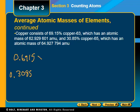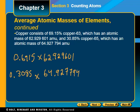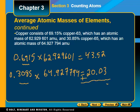Step two: multiply each decimal by its precise relative atomic mass — 0.6915 × 62.929601 and 0.3085 × 64.927794. Reporting to four significant figures, the first gives 43.52 and the second gives 20.03. Step three: add the products — 43.52 + 20.03 = 63.55. The atomic mass of copper is 63.55 AMU. Remember, the unit is always atomic mass units, AMU.